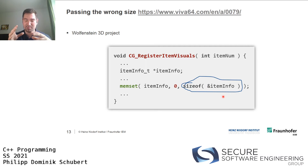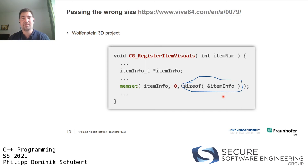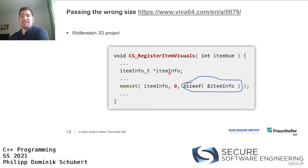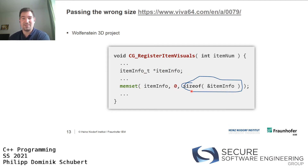In the TortoiseSVN project, code intended to allow only one sender would call 'empty()' on a container - but empty() just checks if the container is empty, returning true or false. It doesn't modify the container at all. The correct function would be 'clear()', which removes all elements. Another bug: checking the same bool variable 'is_point_x_valid' twice with a logical AND - the second check should have been 'is_point_y_valid'.